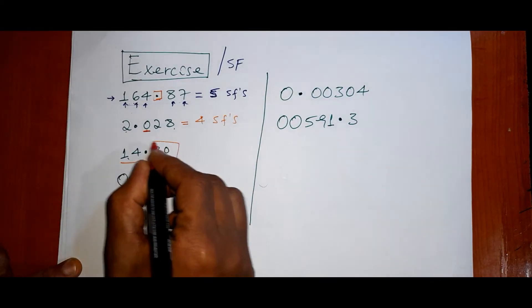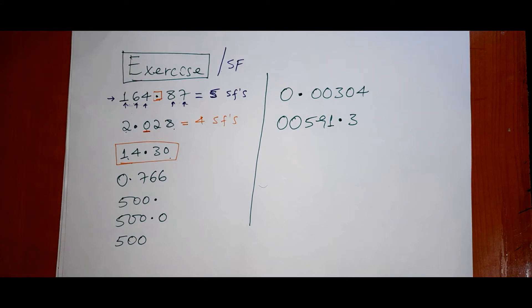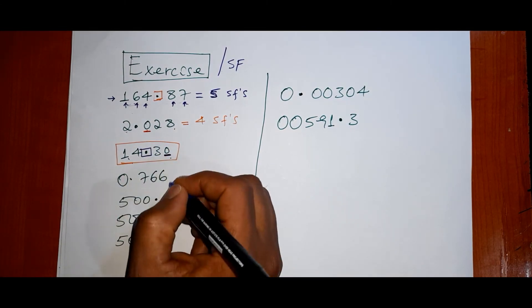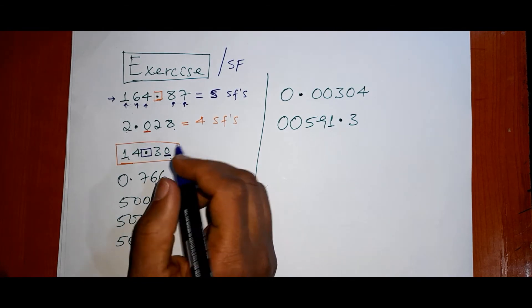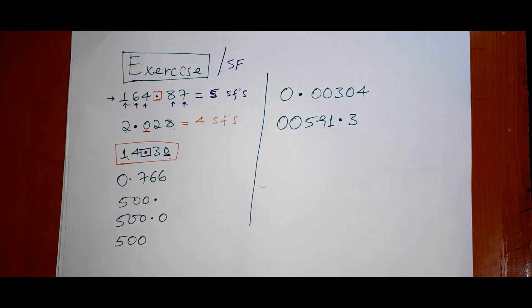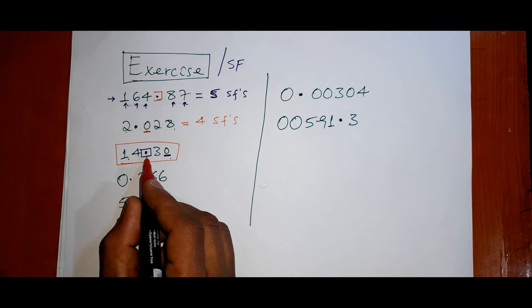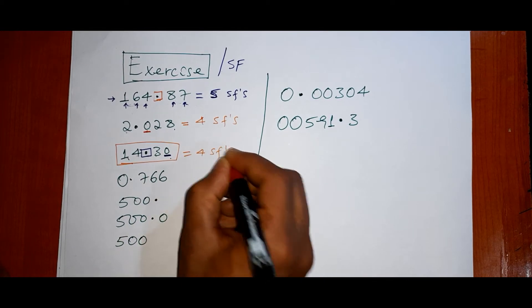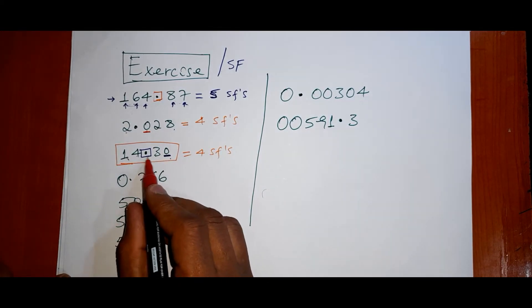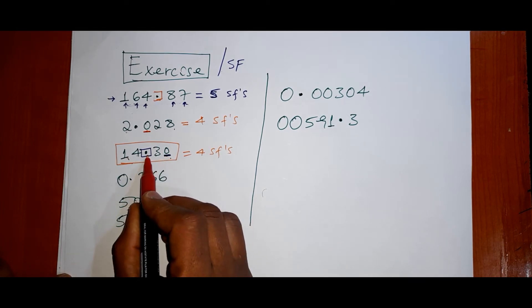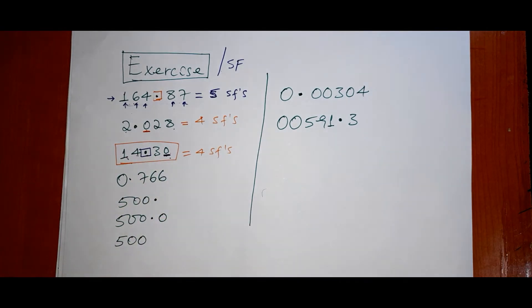Let's see, decimal point is 1, 2, 3, 4 - four significant figures. If you have 14.30, then zeros at the ends of the number, the number with zeros, then these zeros are considered. So the zeros between numbers in the decimal point - 1, 2, 3, 4 - four significant figures.